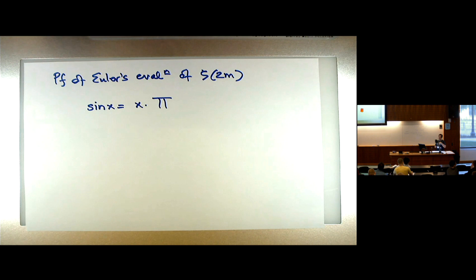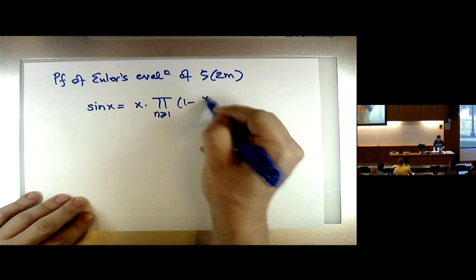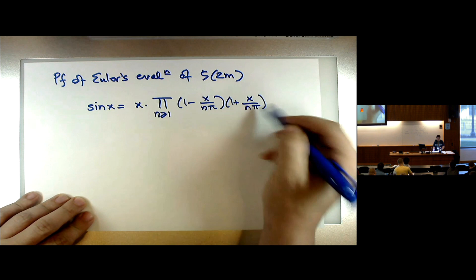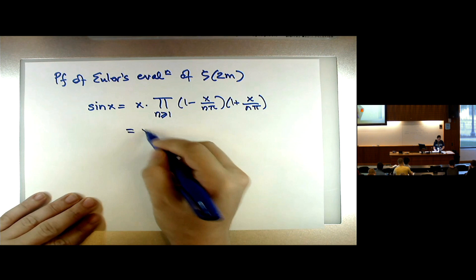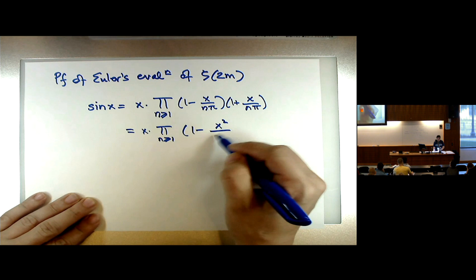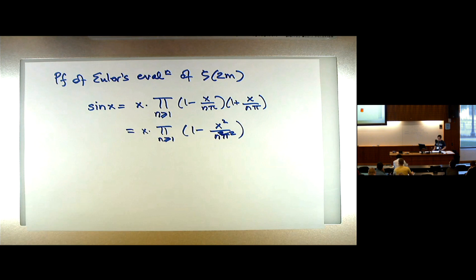Where does sine vanish? It vanishes at 0, ±π, ±2π, ±3π, and so on — at the integer multiples of π. Even in the complex plane there are no other zeros of the sine function. So if you take the product over the reciprocal roots, with factors (1 − x²/n²π²), you get this product representation for the sine function.